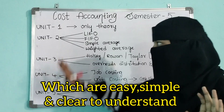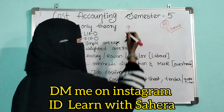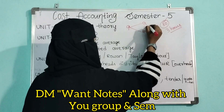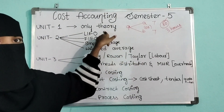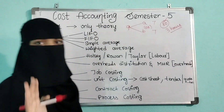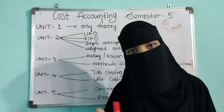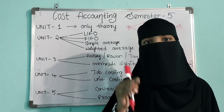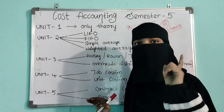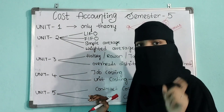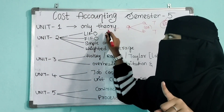Unit number 1 is purely based on theory. In your question paper, question 9 from Part B will have options A or B, and both 9A and 9B will be theory — there will be no problem questions from Unit 1. If you are perfect with only theory, you can attempt question 9. I've already uploaded a video on important questions from Cost Accounting covering long and short important questions. Go to our channel playlist 'Cost Accounting Semester 5' and find the most important theory questions from Unit 1.